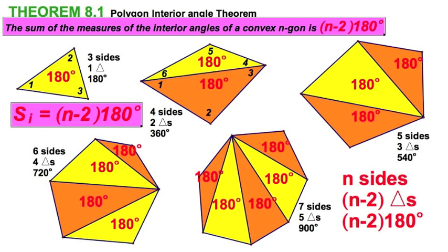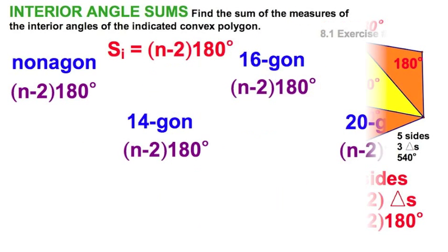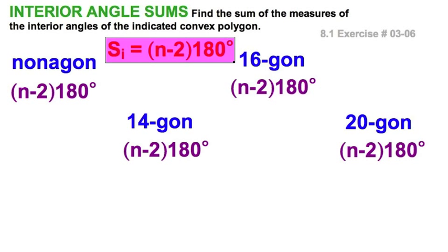So that means the polygon interior angle theorem says that for this convex polygon—oh, we forgot to mention that. Remember, there must be convex, not concave. This would be concave, caved in, doesn't work. So for a convex polygon, it's going to be n minus two, that's the number of triangles, times 180. In the old textbook, we wrote it this way, where S sub i stood for the sum of the interior angle measures.